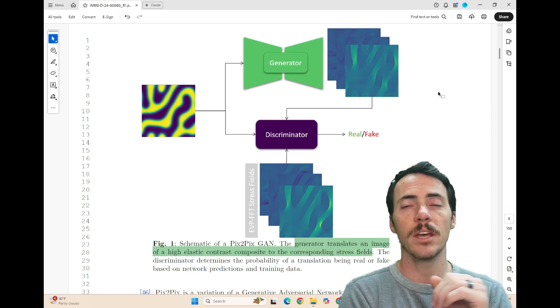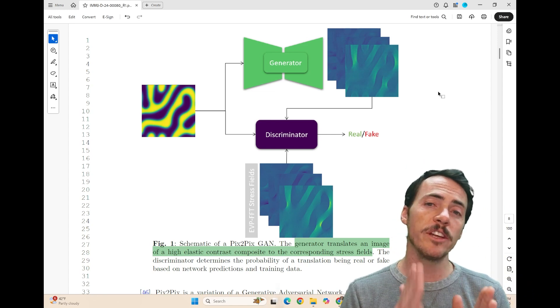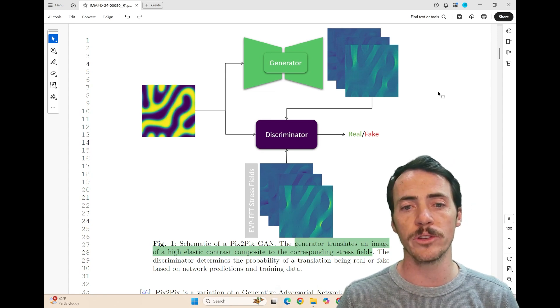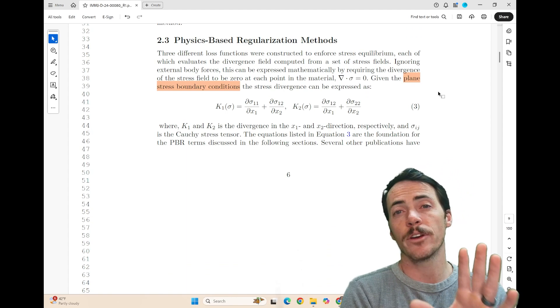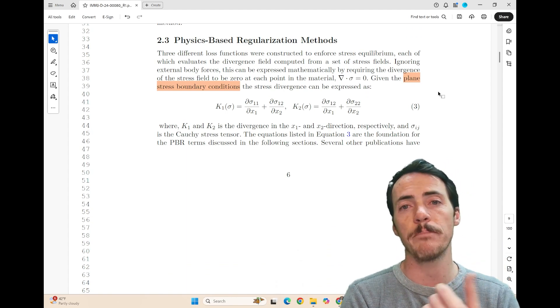So what are they going to be comparing then? In their study, they're going to use a baseline neural network and compare that with three different physics-informed neural networks that have different physics-based term regularization. The soft constraints that they're going to impose on the loss function have to do with plain stress boundary conditions.